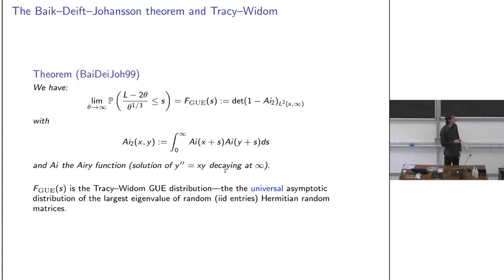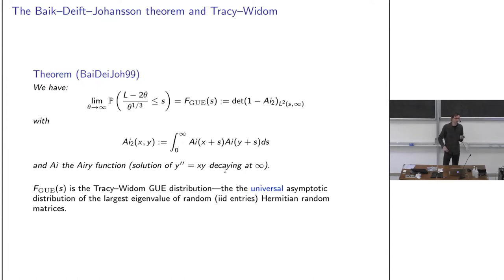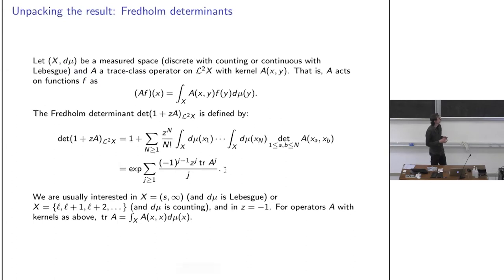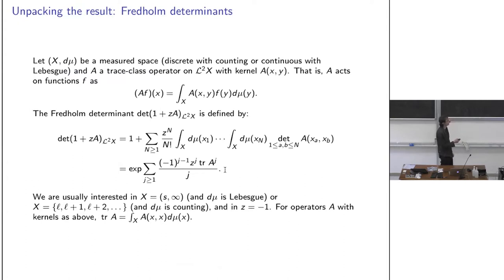There is sadly no such universality result for discrete models, though this distribution appears quite often in discrete models as well. Fredholm determinants are defined as det(I - K) = Σ_{n≥0} (-1)^n/n! ∫...∫ det[K(xᵢ,xⱼ)] dx₁...dxₙ — a standard definition that will be skipped for brevity.